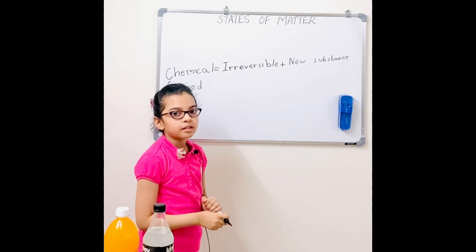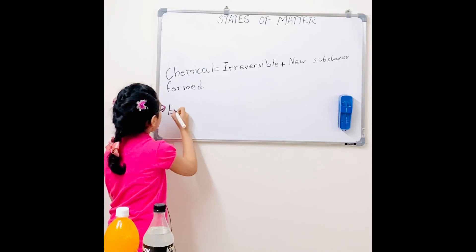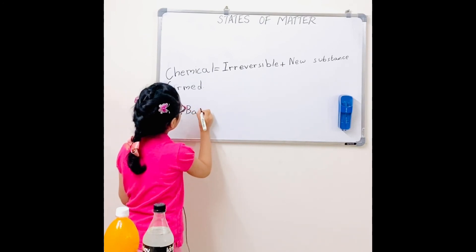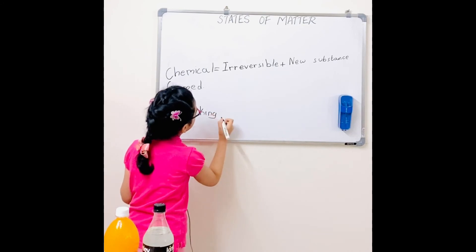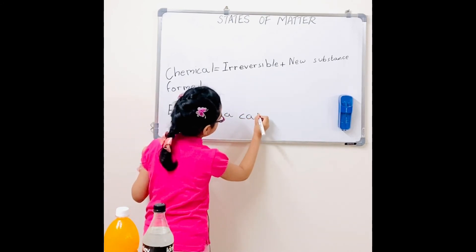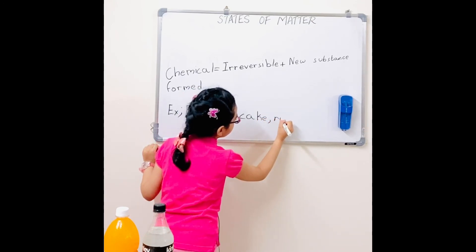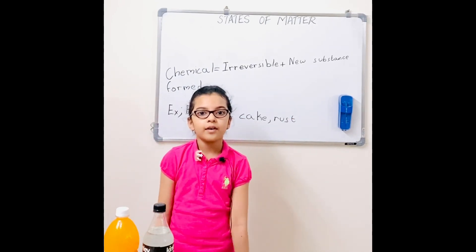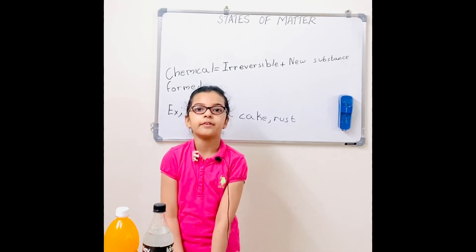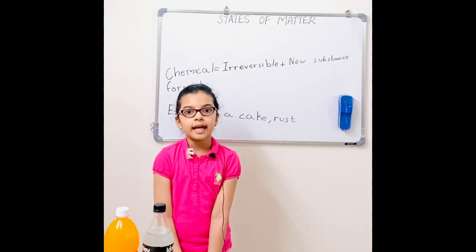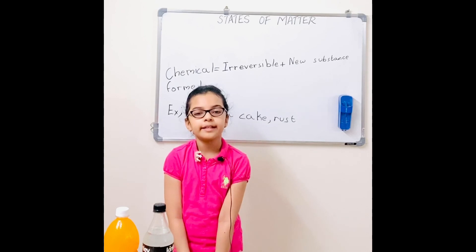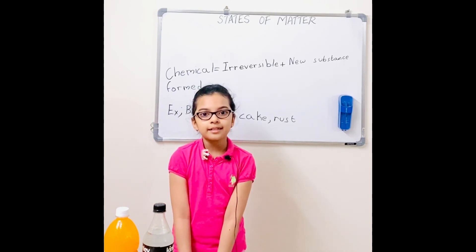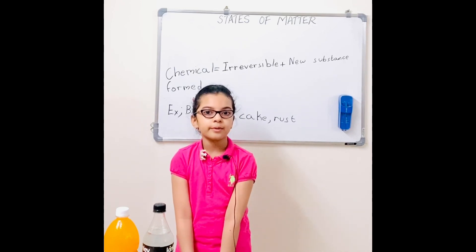A few examples would be baking a cake and rust. Before you put the cake together you have all the ingredients separated — the butter, the eggs, and everything — but when you mix it and it's baked and ready to eat, you cannot separate the ingredients again. In rust, suppose you washed some metal and the next day you see rust on it — you cannot get rid of the rust anymore.